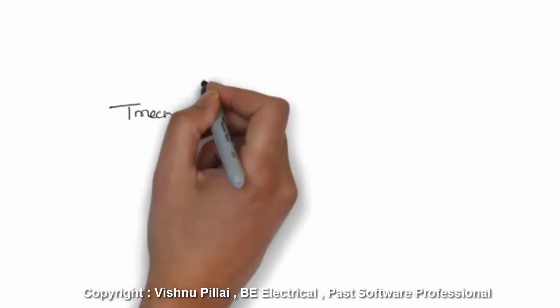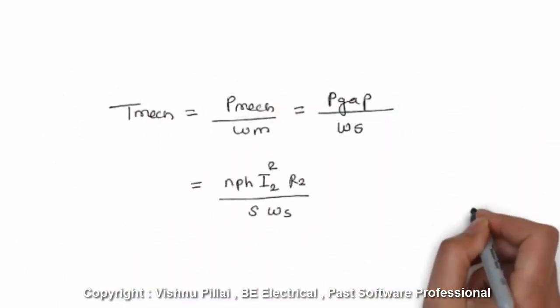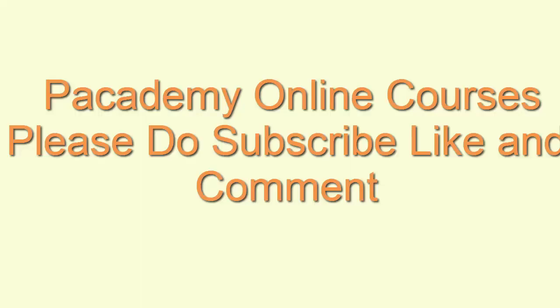The mechanical torque output of the machine can be written as nph × i2² × r2 divided by s × ωs, where ωs is the synchronous angular velocity. For the induction machine, ωs can be written as 2π × ns, the synchronous mechanical rotational speed.